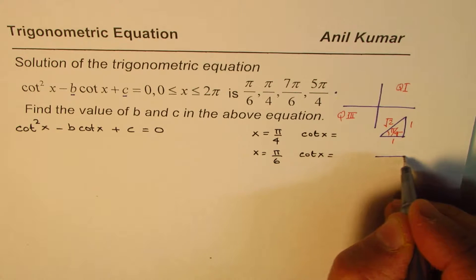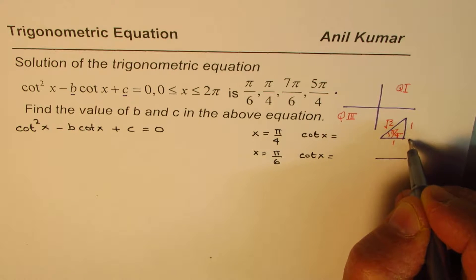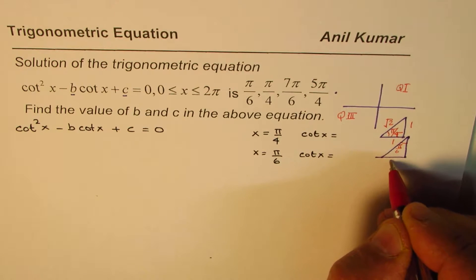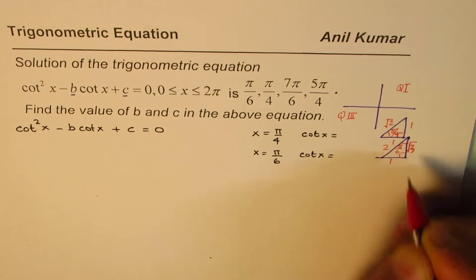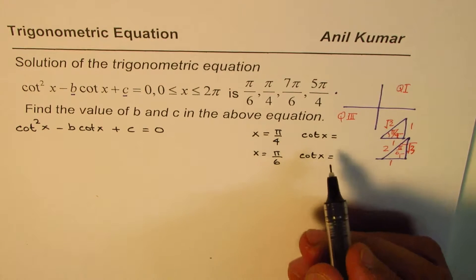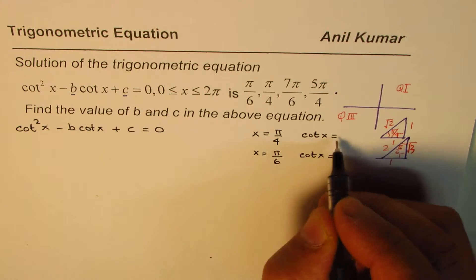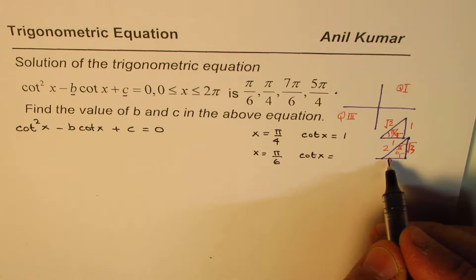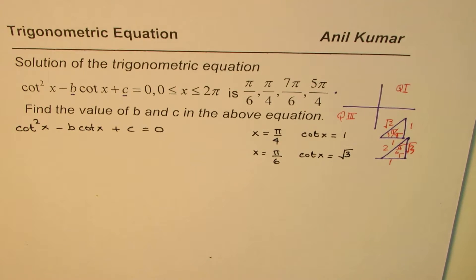For π/6, we use the special triangle with sides 1, 2, and √3 — that is the π/6 triangle. From these triangles, cot(π/4) equals 1, and cot(π/6), since cot is adjacent over opposite, equals √3.